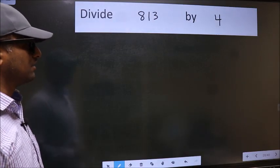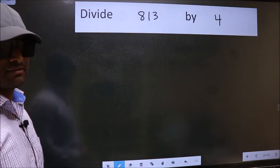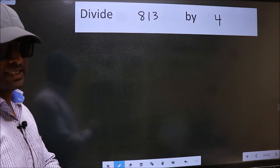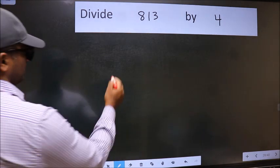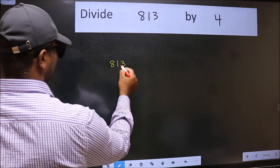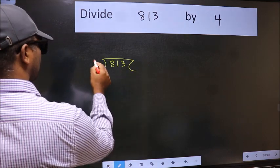Divide 813 by 4. To do this division, we should frame it in this way. 813 here and 4 here.